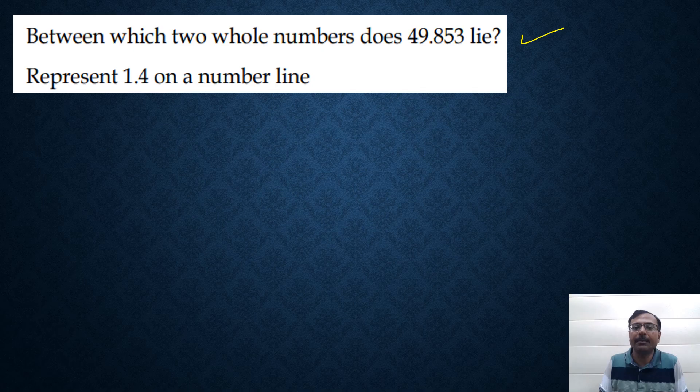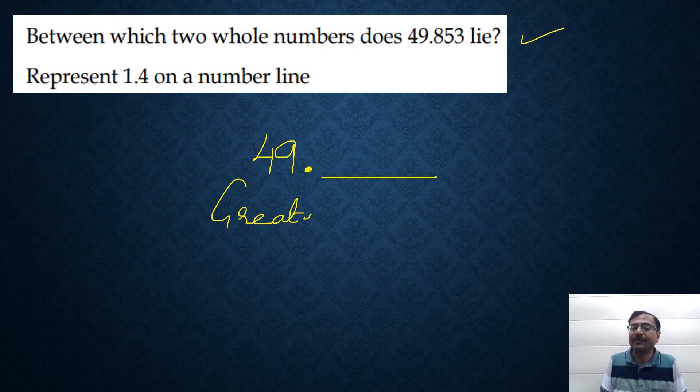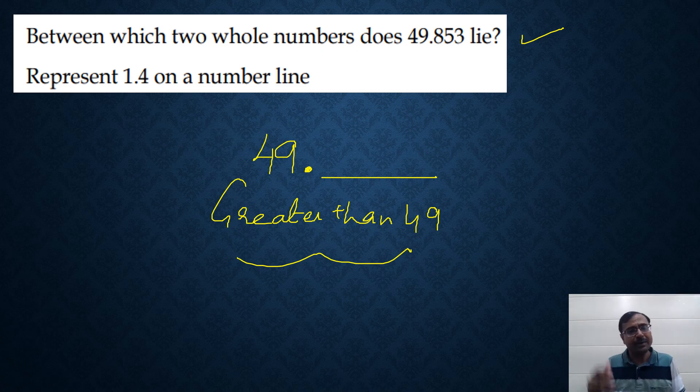Let's see some more questions. Between which two whole numbers does 49.853 lie? That's pretty elementary and I know students must be well aware of that. When you are writing 49 point something, it is always, the number is always greater than 49. Greater than 49. Even if the digits after decimal is like 0.00001, even then, the number is greater than the number which is in front of the decimal that is on the left side of the decimal.